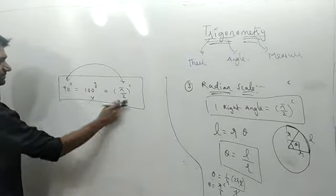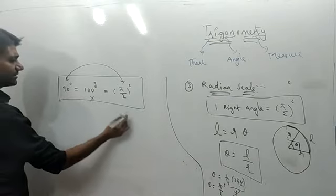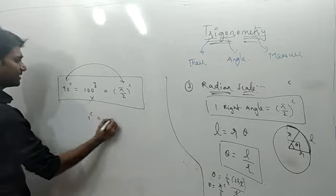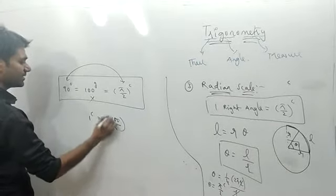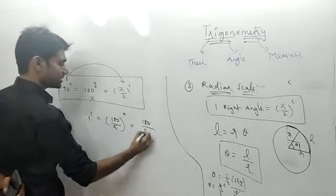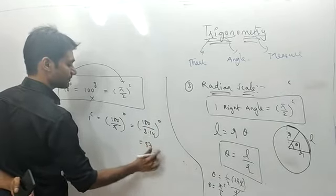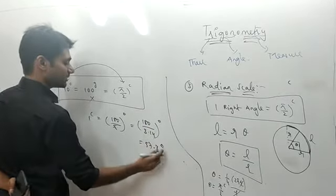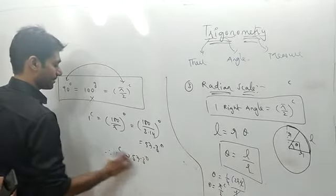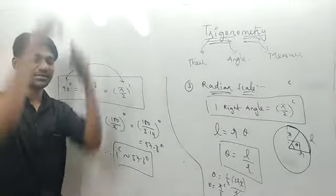One radian is how many degrees? Since π radians = 180°, one radian = 180/π degrees. Using π ≈ 3.14 or 22/7, we get approximately 57.3 degrees. This is a very important relation: 1 radian = 57.3 degrees.